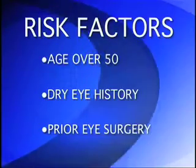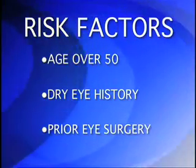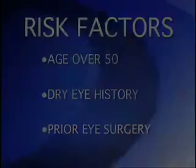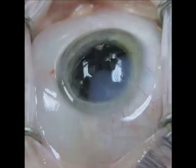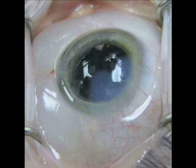Risk factors for conjunctival chalasis include age over 50, dry eye history, and prior eye surgery, particularly where there is a history of a peribulbar or retrobulbar anesthetic that was used. Some have theorized that the use of peribulbar or retrobulbar anesthetic causes conjunctival swelling or chemosis, and this may lead to loosening of the tethering tenons fascia between the eyeball and the conjunctiva.